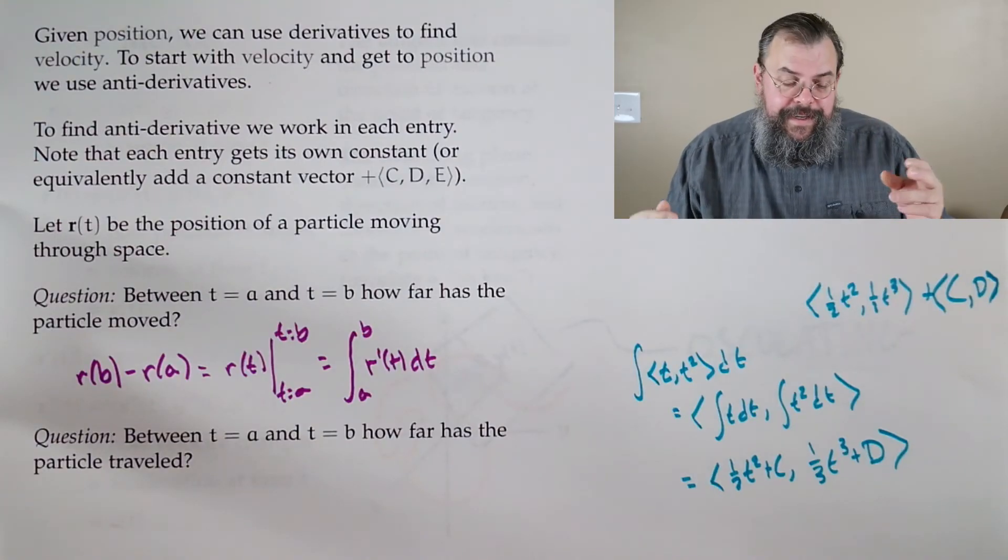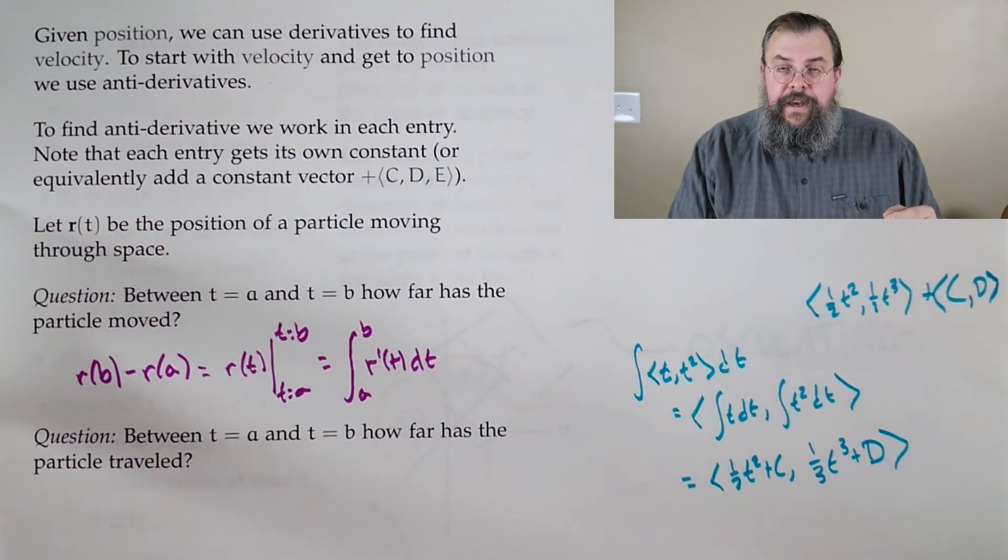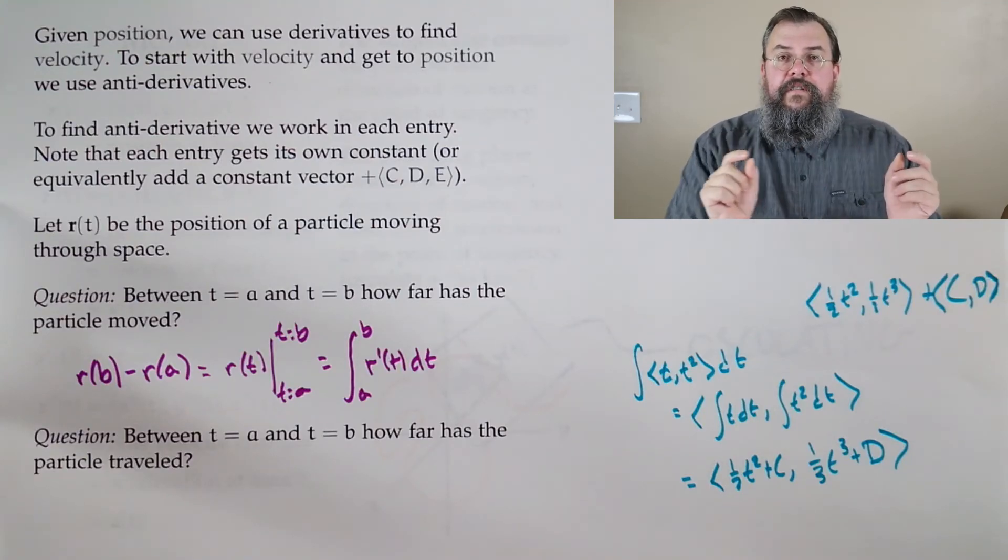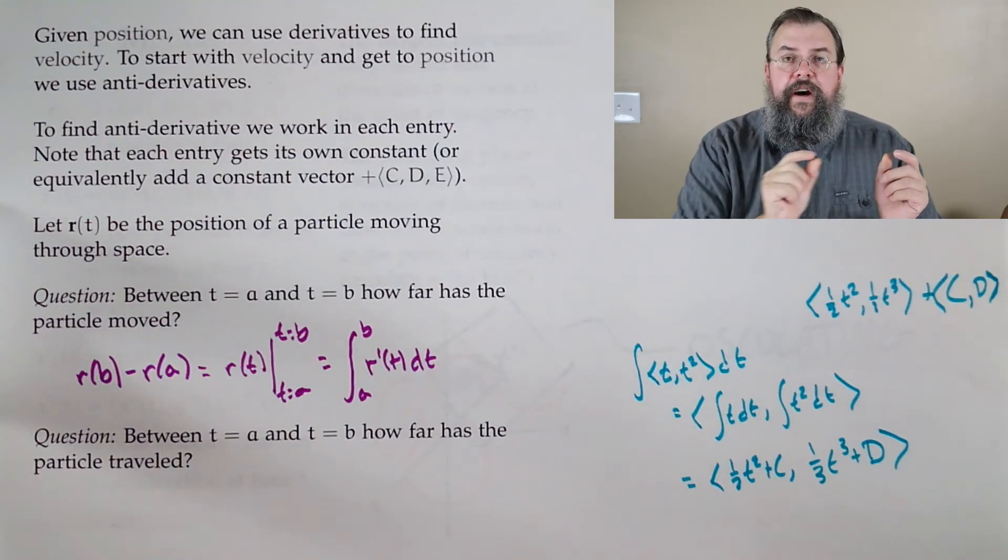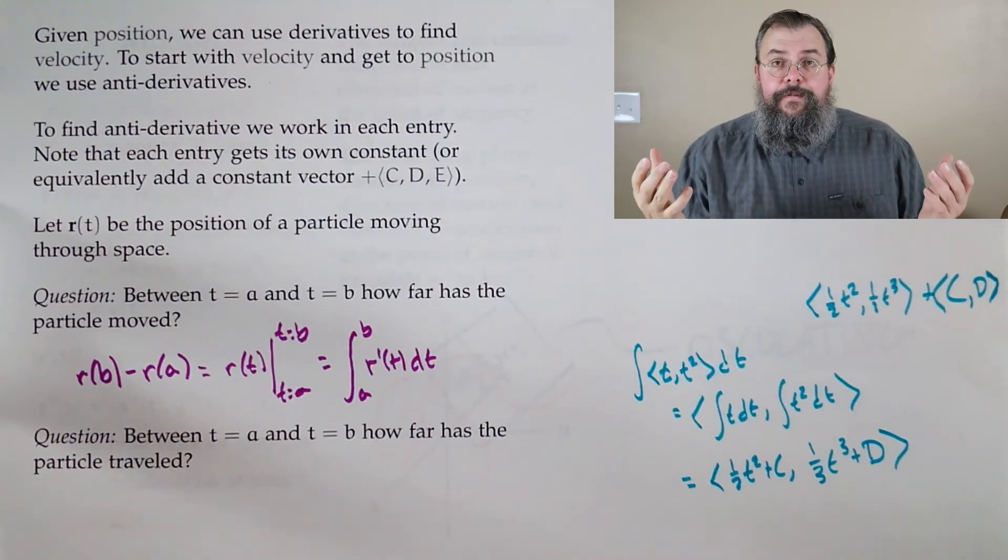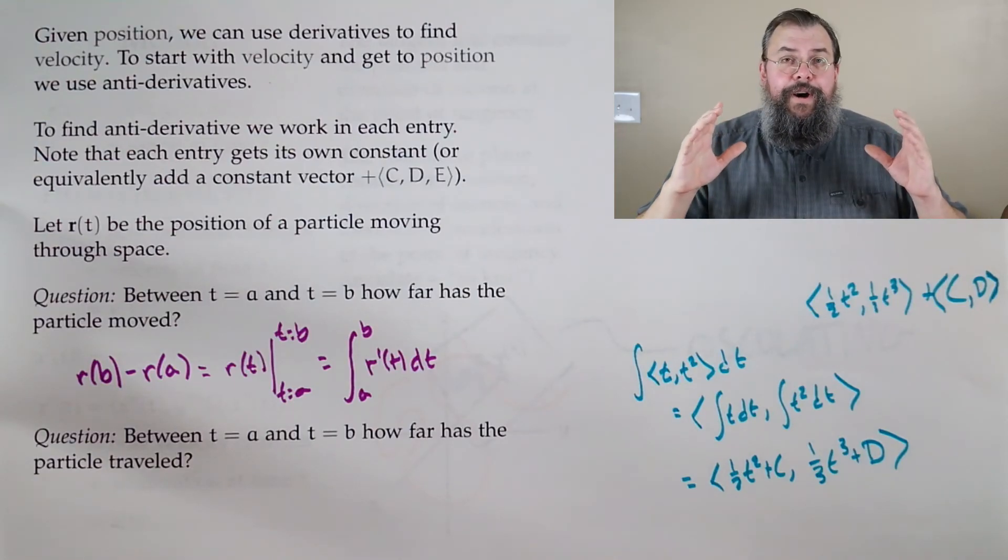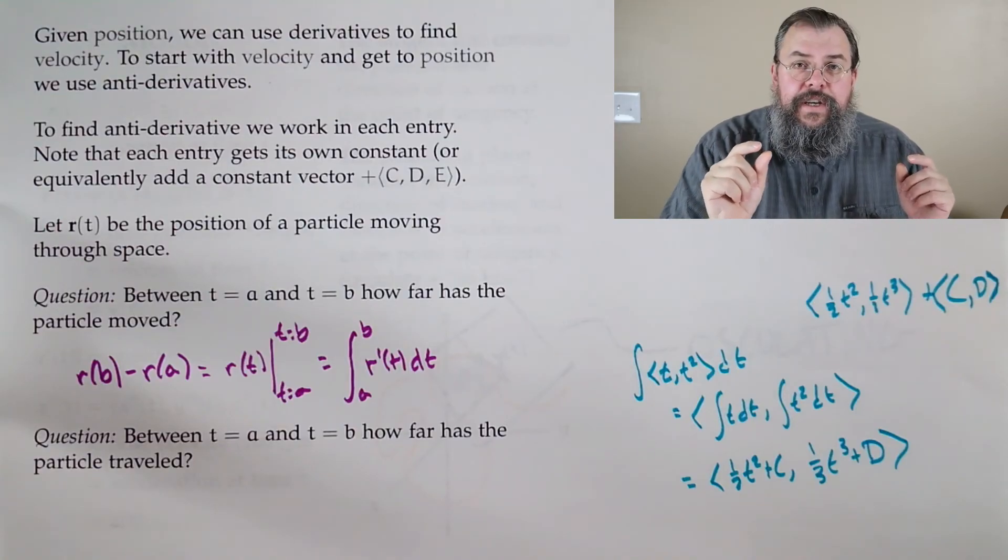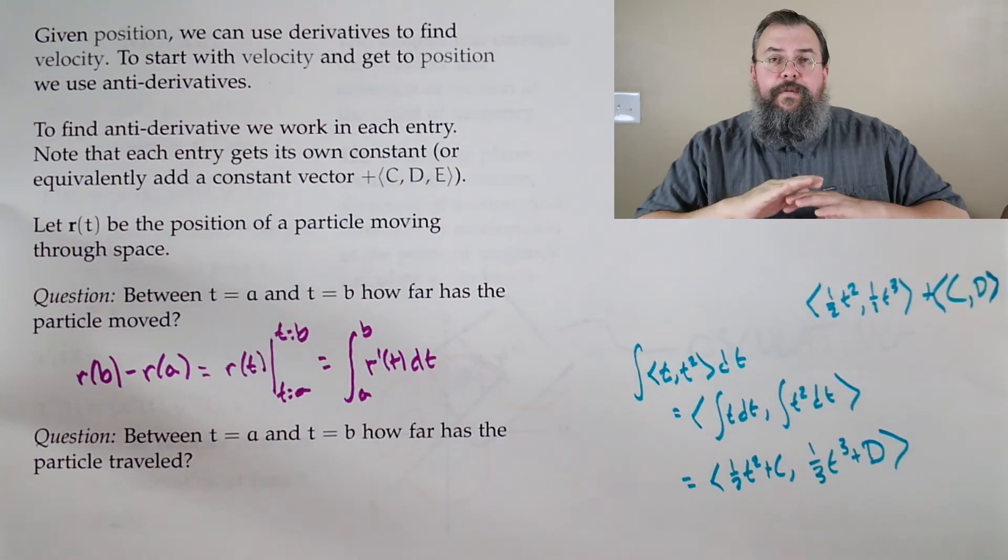Okay. Second question. Between time t equals a and t equals b, how far has the particle traveled? You see, when we initially said, well look, we start here at a, we end here at b. We could be moving all sorts of ways. But at the end we say, look, I only care about the start and the finish. We don't care about the journey in between. But there's certainly a difference between doing a journey that goes straight across versus one that's very meandering. It takes a while to get there. So how do we figure this out?